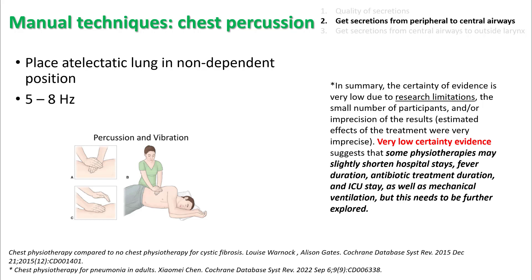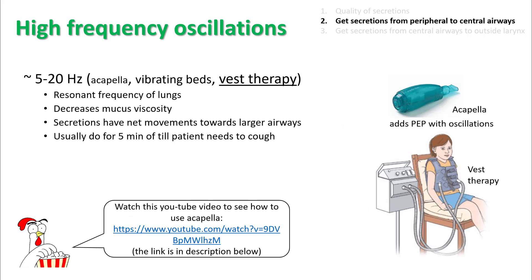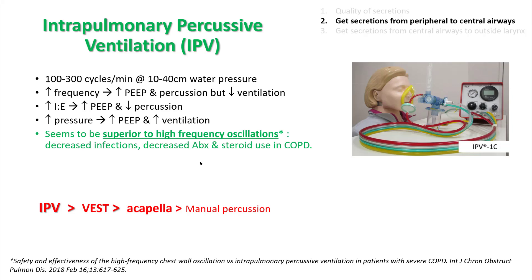Just like other methods, the quality of evidence is pretty small because there are no large studies done in this area. However, smaller studies show there may be some benefit. High-frequency oscillation such as VEST therapy uses the resonant frequency of the lungs — these vibrations decrease mucus viscosity and secretions then have net movement toward larger airways. Acapella and vibrating beds can help mobilize secretions as well. Intrapulmonary percussive ventilation (IPV) possibly has the best evidence amongst all oscillatory devices, delivering 100 to 300 cycles per minute at 10 to 40 centimeters of water pressure. In one study, IPV was found superior to VEST therapy by decreasing infection rate, antibiotic use, and steroid use in COPD patients.